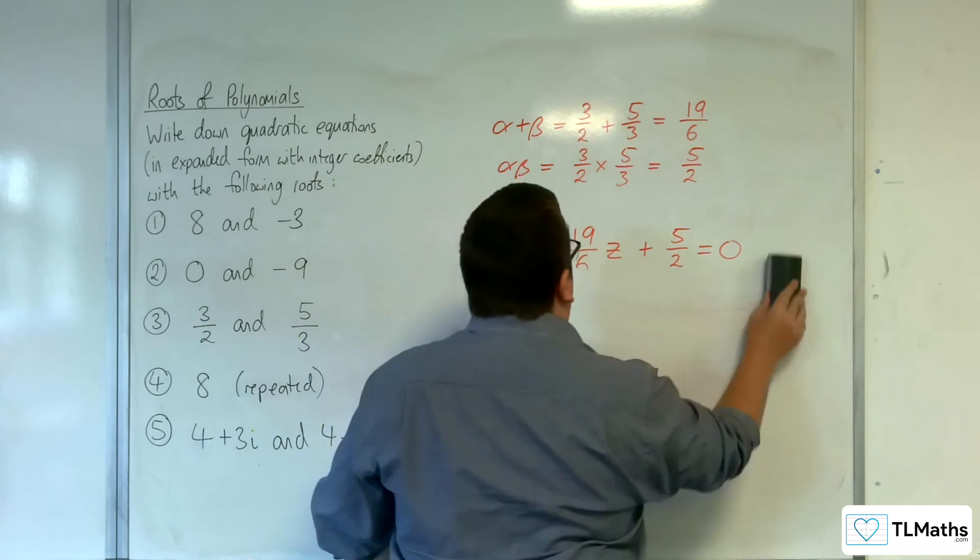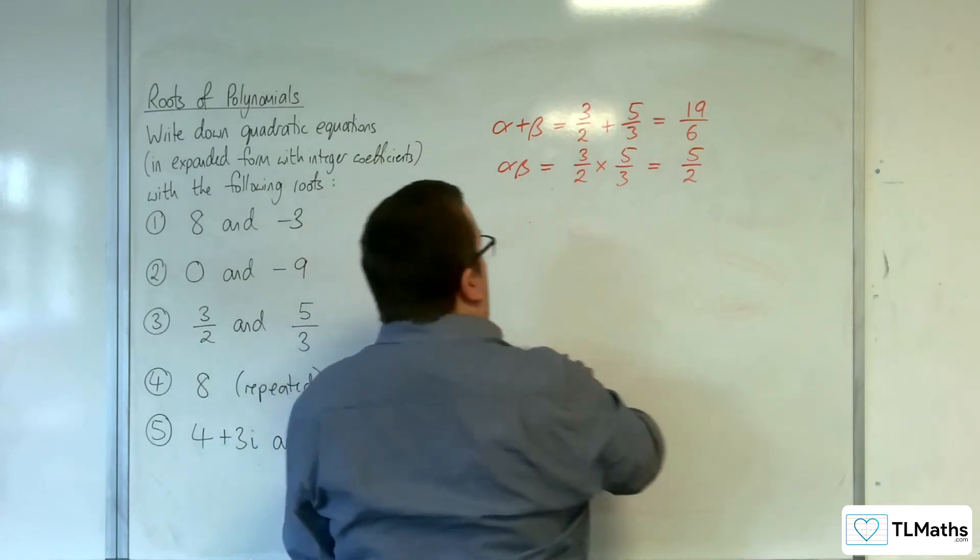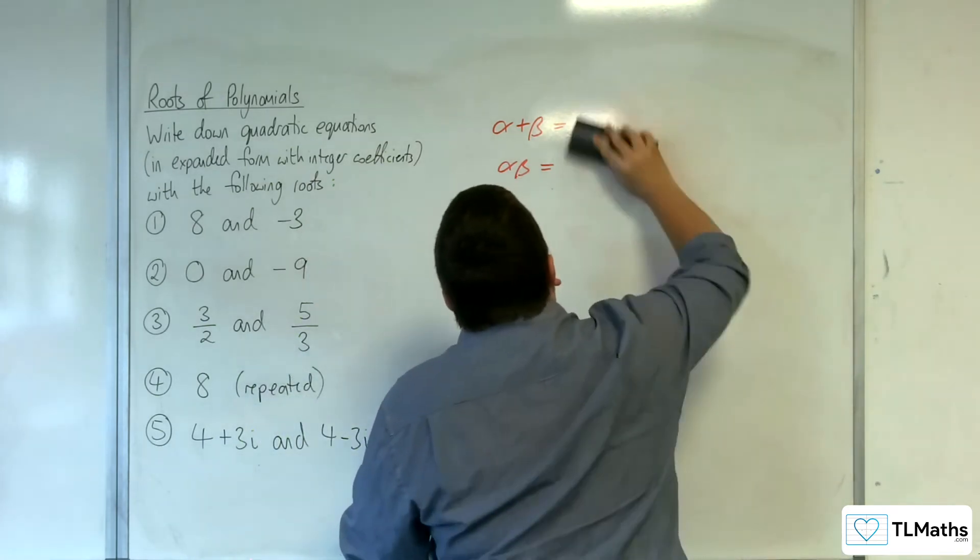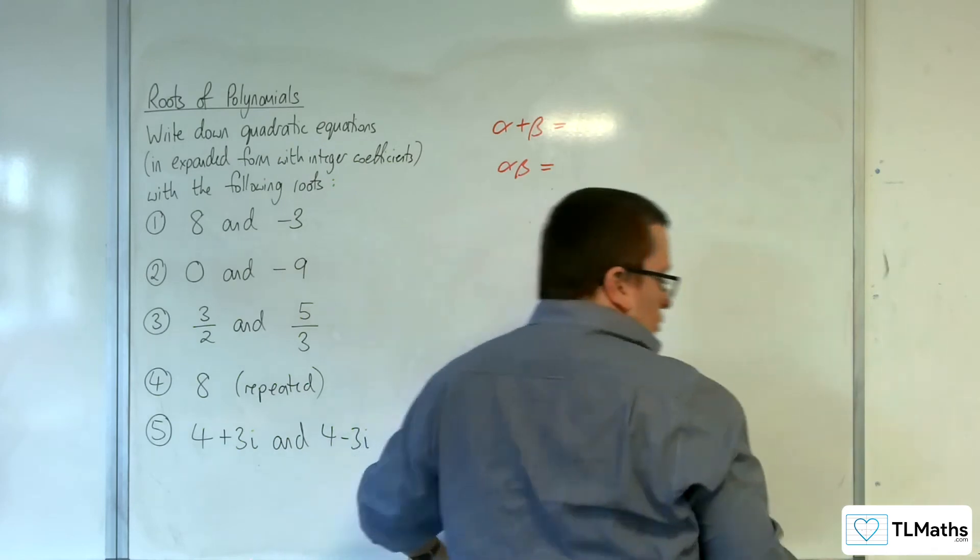So once you kind of get into the habit of using alpha plus beta and alpha beta, then it becomes much more straightforward.